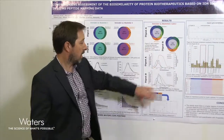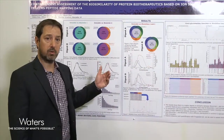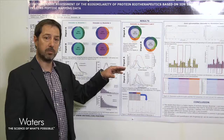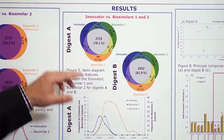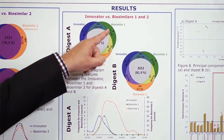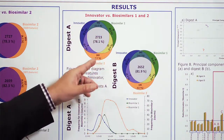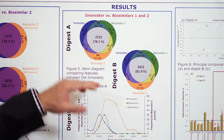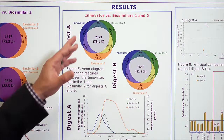Now on the middle panel, we did a three-way comparison between the innovator, biosimilar one, and biosimilar two. These two Venn diagrams are digest A and digest B. You see very few unique features for the innovator and biosimilar one, and seven percent and six percent unique features — depending on the digest — for biosimilar two.